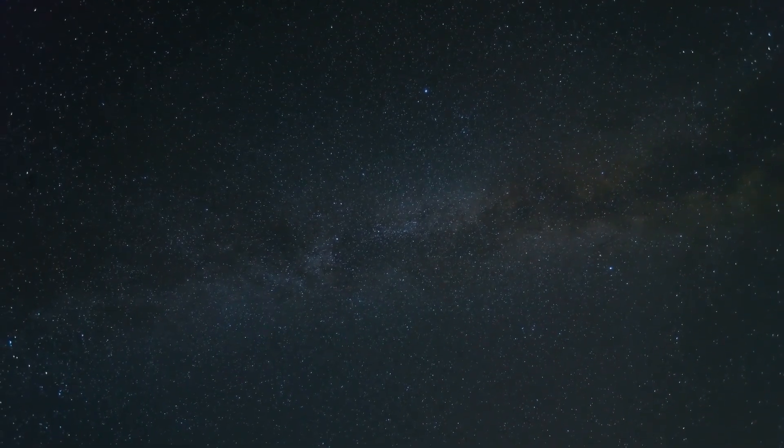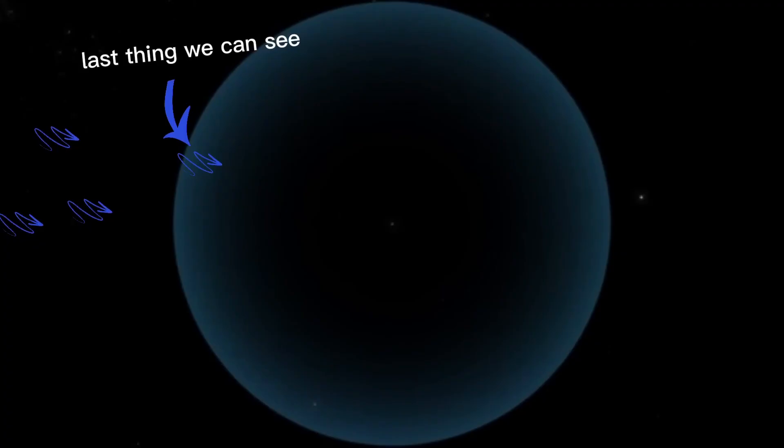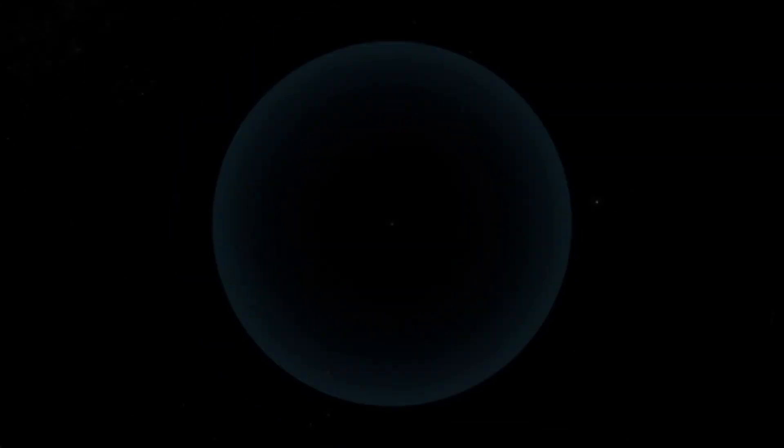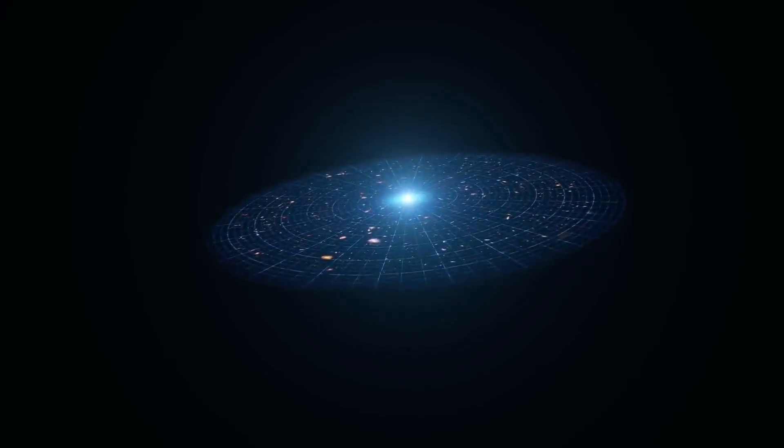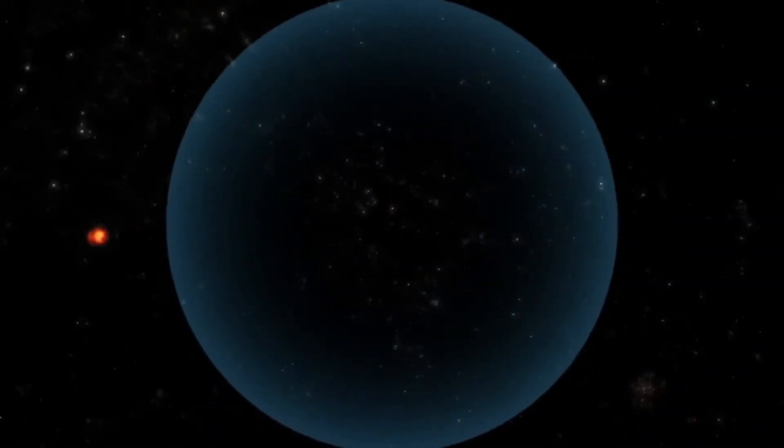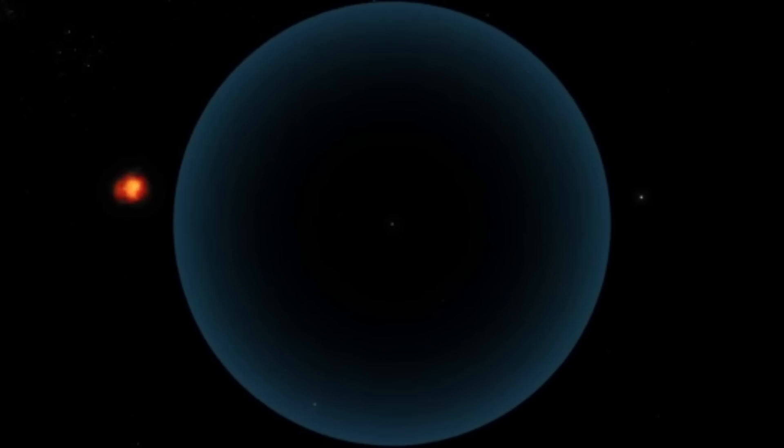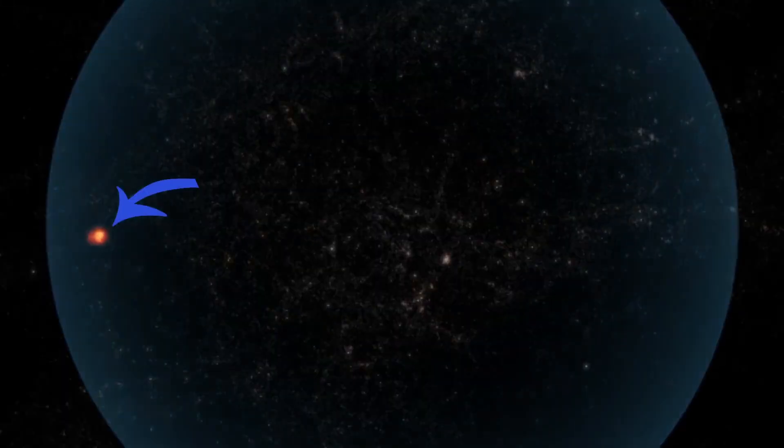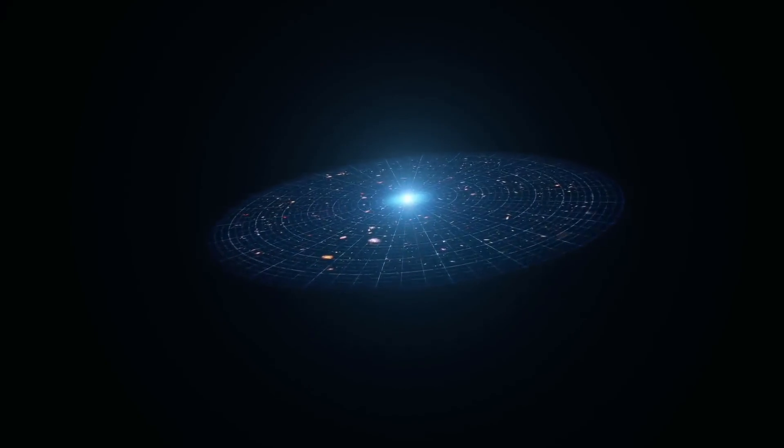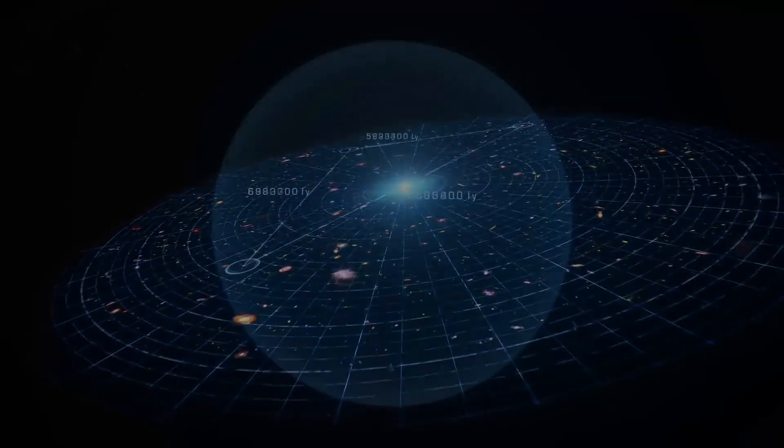This observable universe is a 93 billion light-year-wide imaginary spherical shell around us. This is the maximum distance up to which we can see galaxies or stars. The light coming from inside this sphere must have been emitting light for a long time so that that light could reach us. Anything outside of this sphere will not be visible to us ever, even with the strongest theoretical telescopes. That does raise the question, just how big is the entire universe outside the walls of our observable universe shell?